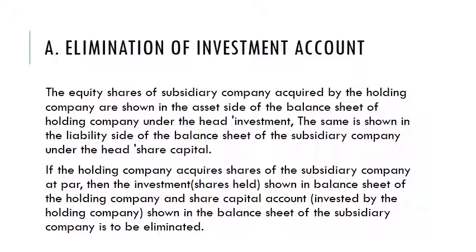The first consolidation procedure is the elimination of the investment account. The value of the holding company's investment in the subsidiary company — this is on the asset side as the investment. The subsidiary company's share capital is eliminated against it.